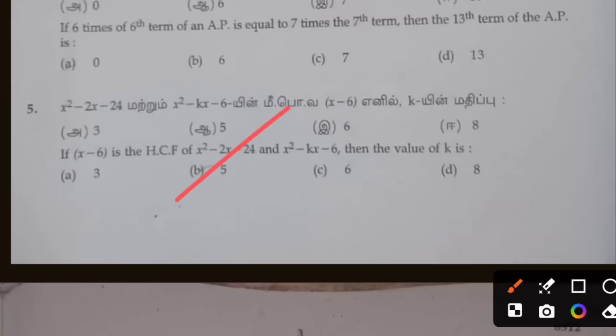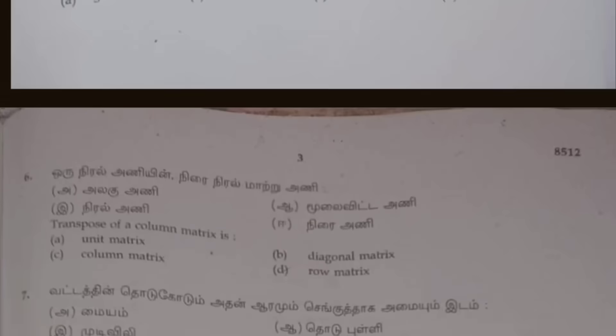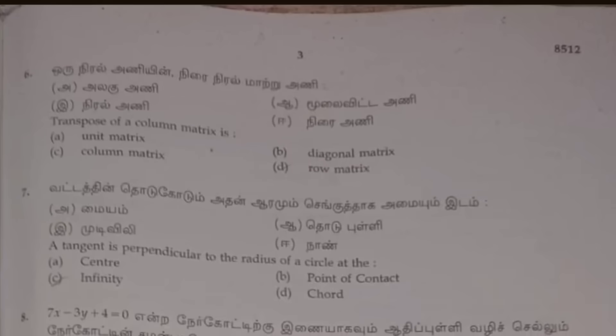And sixth one: you have option D. 4M. And seventh one: you have option B — point of contact. This one, we do.